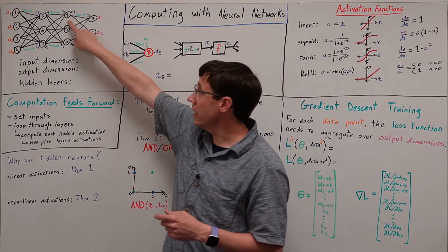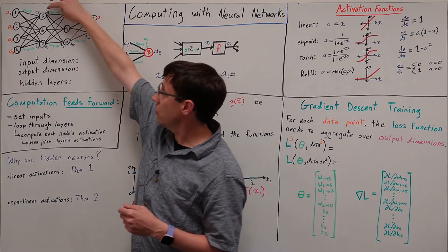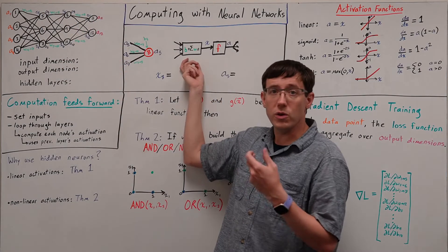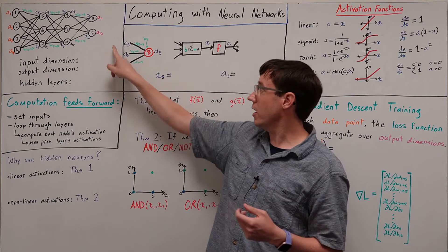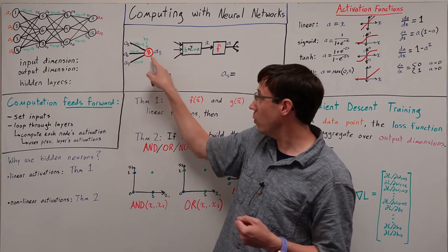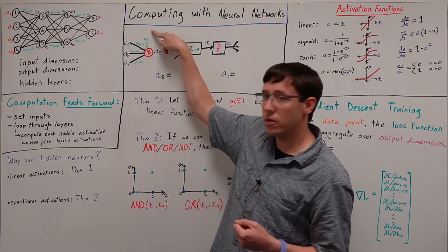In the case of neuron 8 in this network, it receives its inputs from neurons 5, 6, and 7. So, the weighted sum of inputs that neuron 8 performs adds up the activations of those neurons times the weights on the corresponding edges plus the bias.